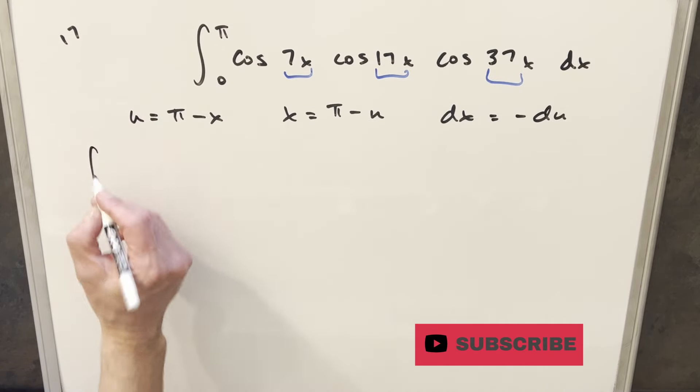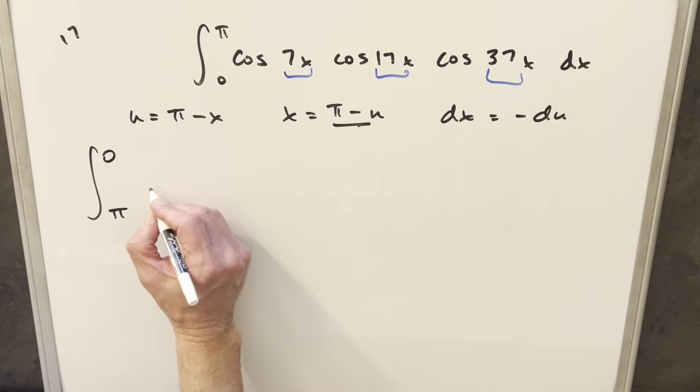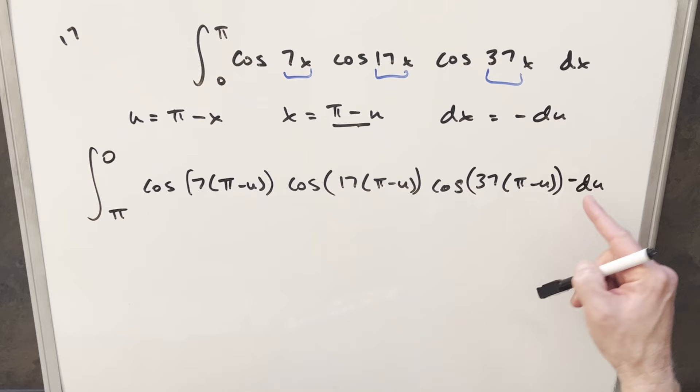So then we'll just go ahead and substitute. So we'll plug pi in right here. We get a 0 for the upper bound, plug 0 in, you get pi. And then everywhere we see an x, we need to plug this thing in. So let's just write all that out.